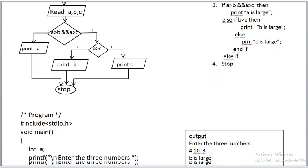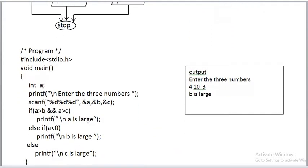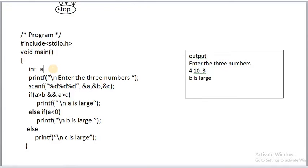Now the program. Here we declare three variables — A, B, and C — creating memory locations with those names. When the program runs, the message 'enter three numbers' is printed. Then scanf reads three numbers using three format specifiers, waits for input, and assigns the values to A, B, and C. Then control goes to the next statement.